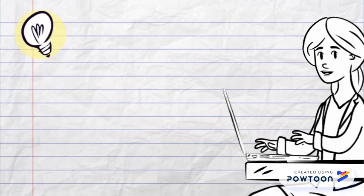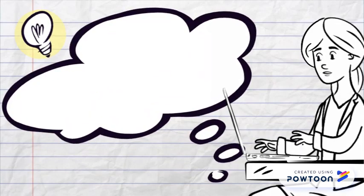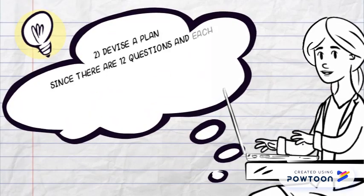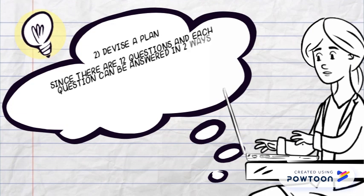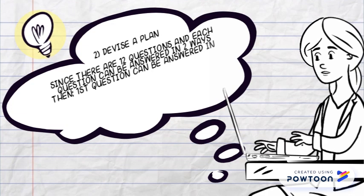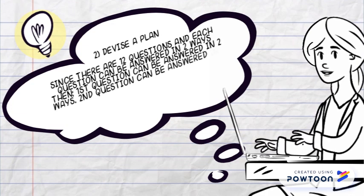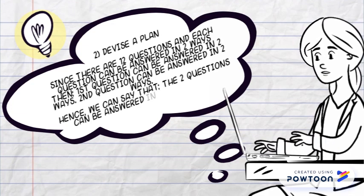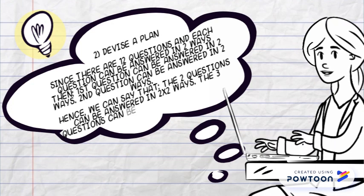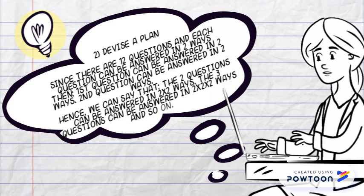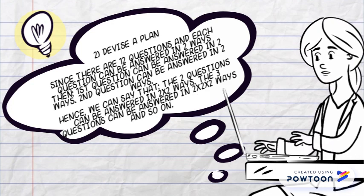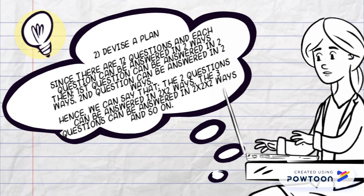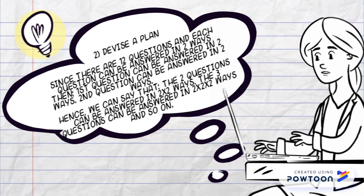Second, devise a plan. Since there are 12 questions and each question can be answered in 2 ways, we can say that 2 questions can be answered in 2 × 2 ways, 3 questions can be answered in 2 × 2 × 2 ways, and so on.